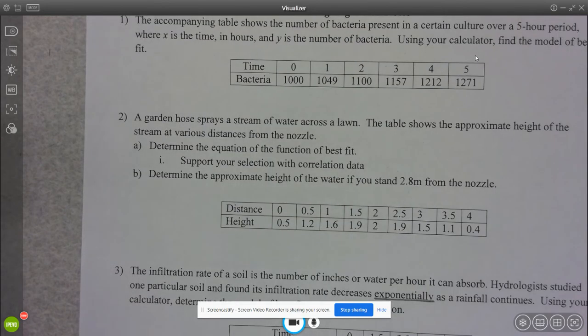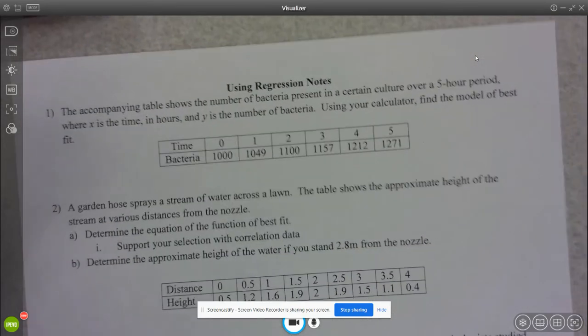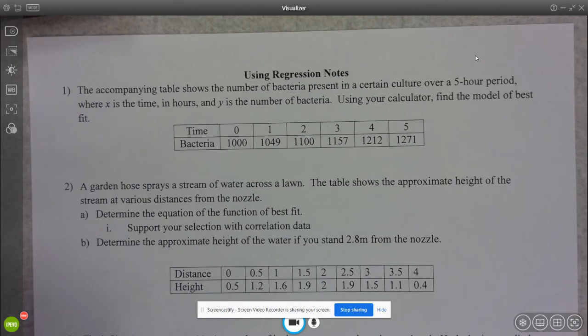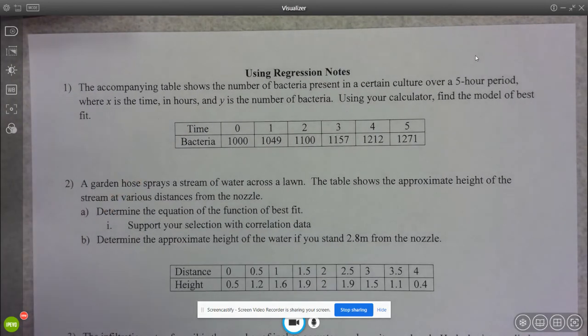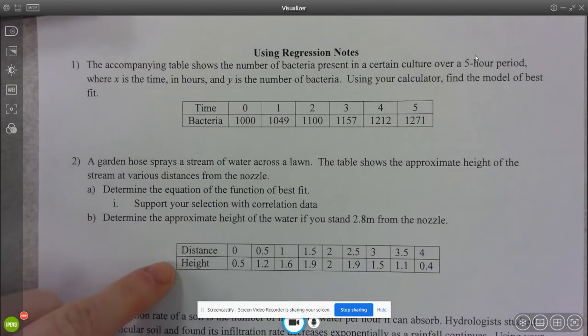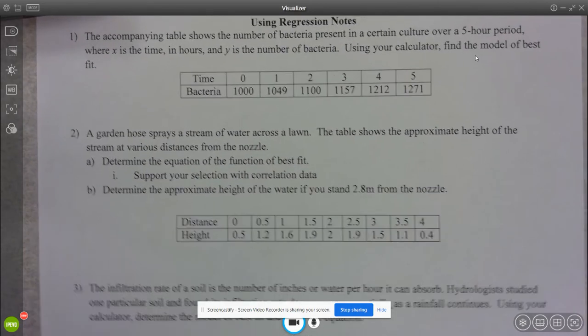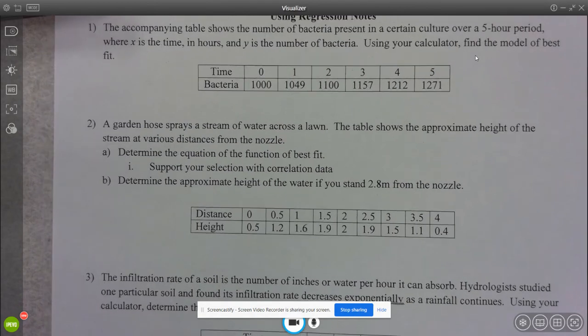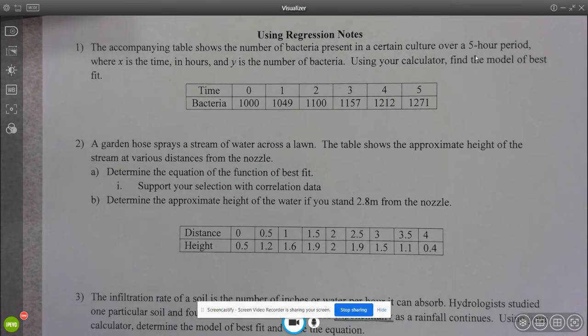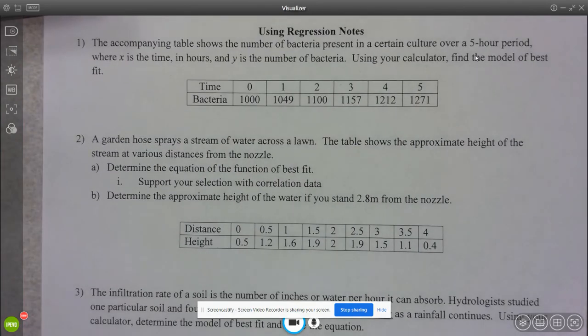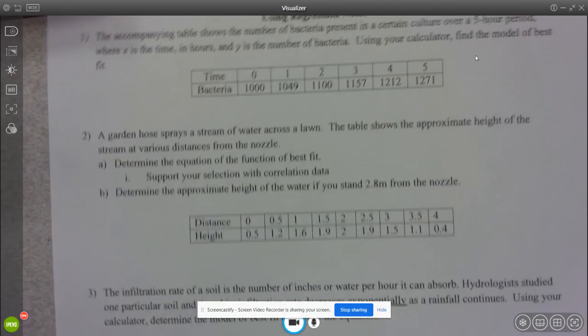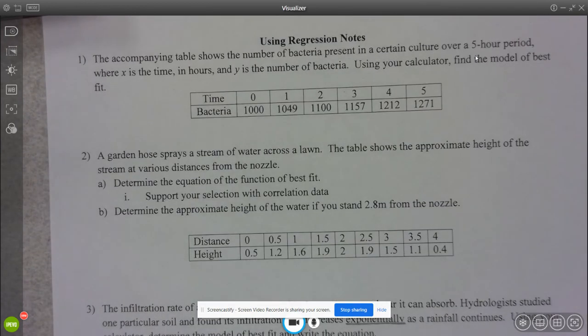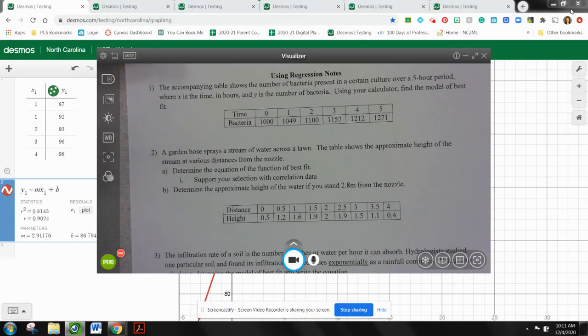All right. So now we're going to move on to this sheet that I gave you. It might be helpful if you pause the video and go ahead and make a new Desmos slide or screen in your browser for each of these tables. And then unpause the video after you have a new screen for each of these. So you'll have five screens open total. And we're just going to work through these questions together so that we make sure you have a good understanding of regression.